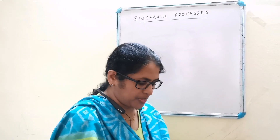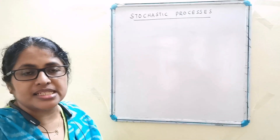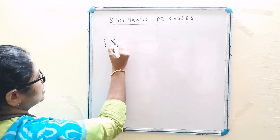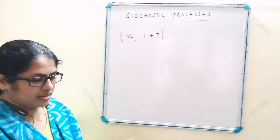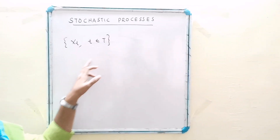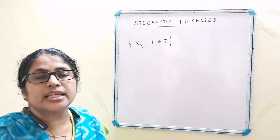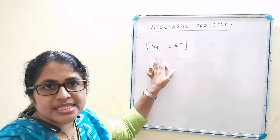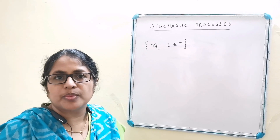It may be thought of as the mathematical abstraction of any empirical process whose development is governed by probability. A stochastic process may be defined as a family of random variables x(t) depending on a parameter t taking values from set T. Therefore, a stochastic process is denoted by {x(t), t ∈ T}. Here, capital T is known as the time space or parameter space. The parameter t need not be time always — it may denote place, month, or any repetition number. The set consisting of all possible values of x(t) for all possible values of t is known as state space, denoted by S.